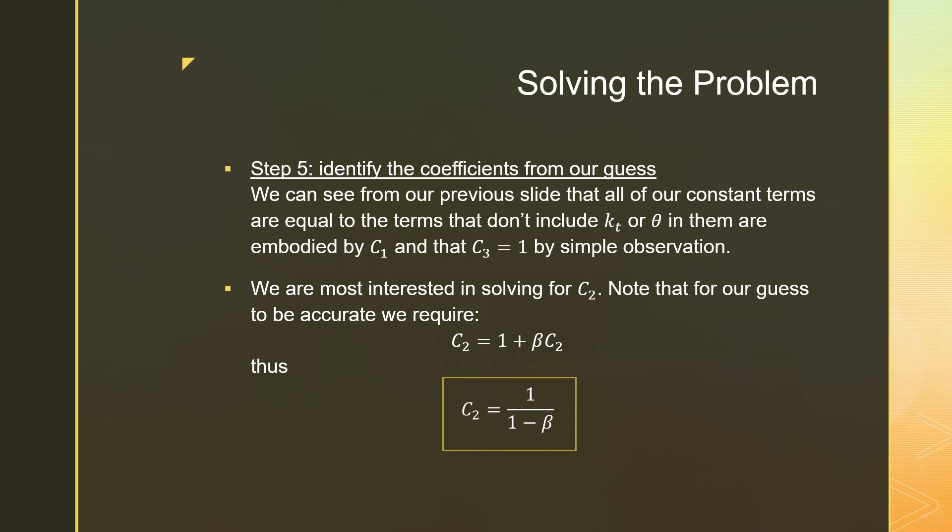So moving forward from that and solving that even further, we have to identify the coefficients from our guess. So as previously stated, C1 is just all the constant terms in that equation at the bottom of the slide. And C3 is going to be 1 by simple observation. What we're interested in is solving for C2.